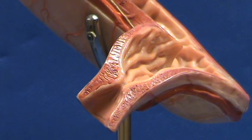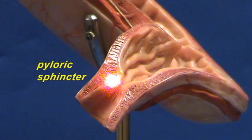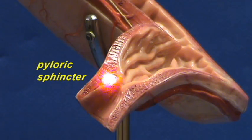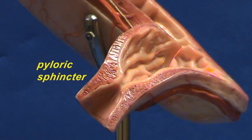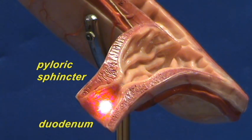Right over here is where we find the pyloric sphincter. This is a sphincter which is due to the presence of an increase in the thickness of the circular layer of smooth muscle, and this sphincter is going to control the outflow of chyme from the stomach into the duodenum, which would be beginning right over here.